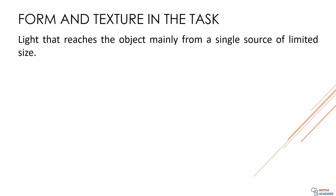In task lighting, form and texture are important considerations that can impact the performance and comfort of the user. Revealing form and texture with interior lighting is influenced by the type and placement of light sources. We will explore five types of lighting and their effects. Beginning with light that reaches the object mainly from a single source of limited size — like shining a flashlight on a small object in a dark room — which creates strong contrast between light and shadow, making the form of the object stand out.